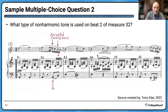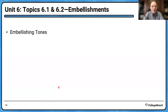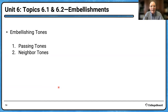So those are accented passing tones, because they start on the strong part of the beat. This is in Unit 6, Topics 6.1 and 6.2, Embellishments — embellishing tones. Passing tones and neighbor tones are the most common kinds of embellishing tones.